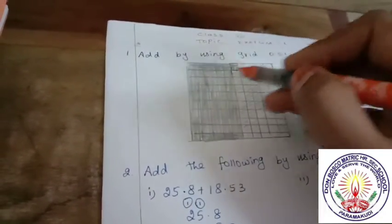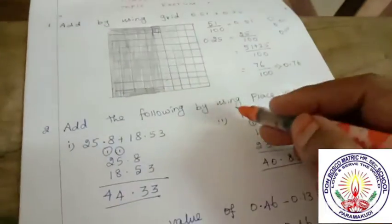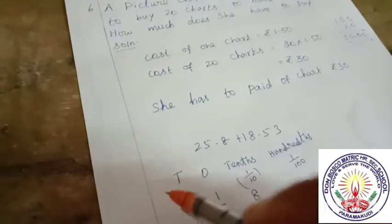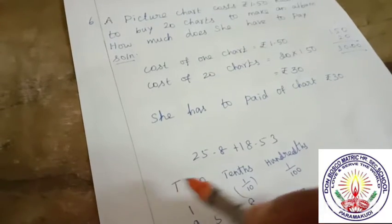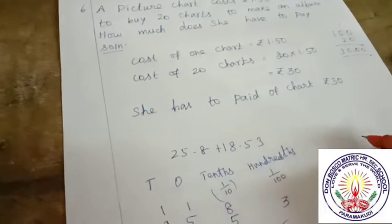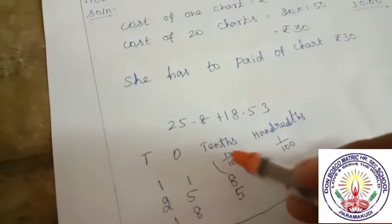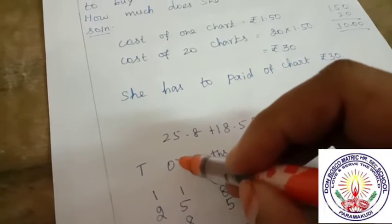Therefore, that's 4 in 10s, 100s, 10s. Put the point in the middle. The answer is 44.33.